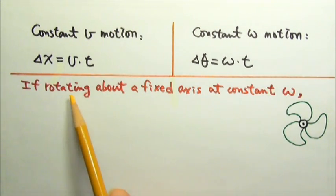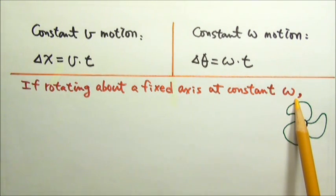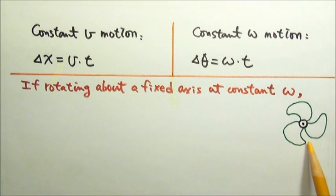If an object is rotating about a fixed axis at constant angular velocity, like a set of fan blades rotating about its fixed axis at a steady rate, the motion would be periodic.